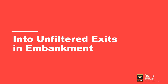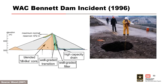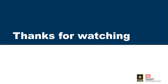To wrap up, stoping can occur in narrow or even reasonably wide sloping or partially sloping central core dams constructed with broadly graded cohesionless soils susceptible to internal instability if not properly protected by filters or a transition zone. Voids develop at the interface with the unfiltered exit that grow or stope upward and backward sub-vertically as erosion continues. Global backward erosion is used by some organizations outside of the U.S., but the Corps considers this process to be internal migration. BC Hydro's WAC Bennett Dam in British Columbia is a case history of internal instability leading to stoping and sinkholes, discussed in more detail in the internal instability presentation. This concludes the presentation on internal migration or stoping.